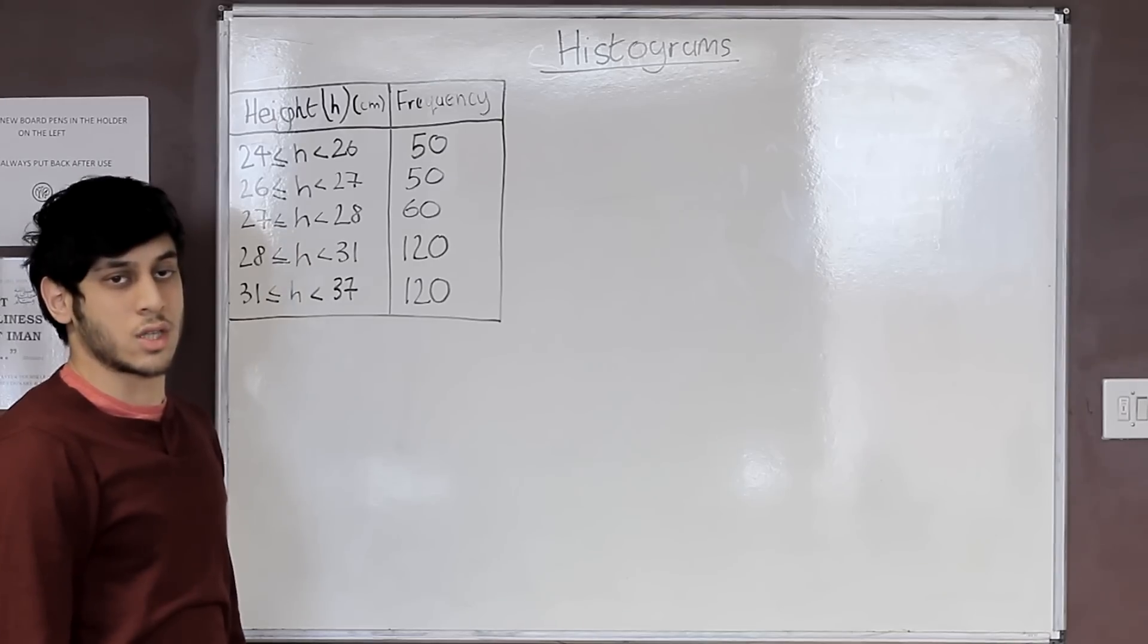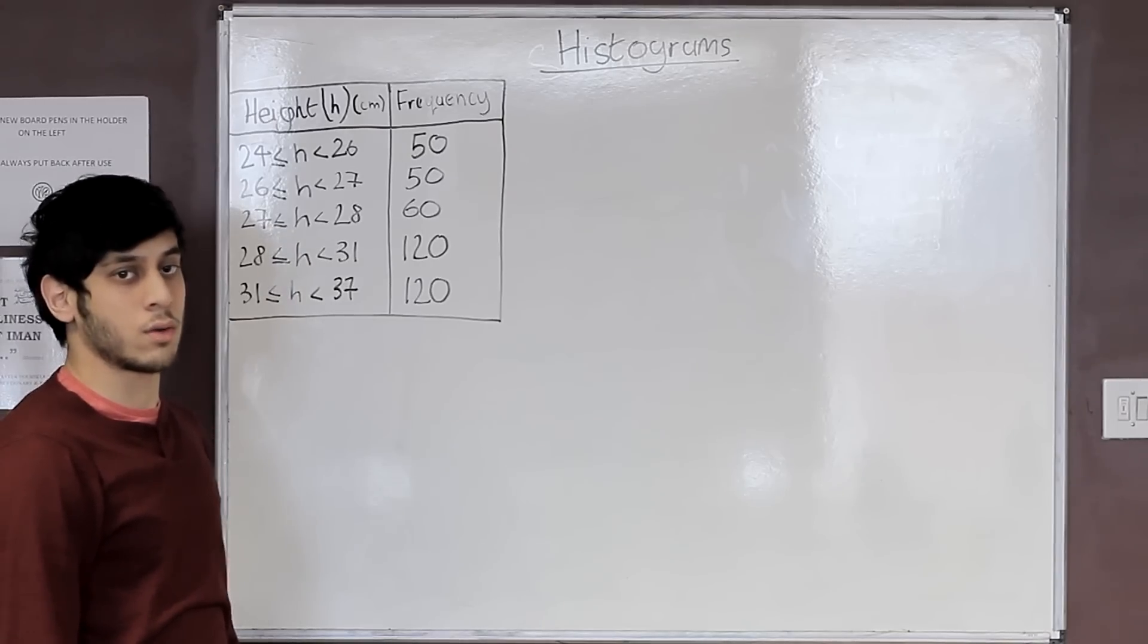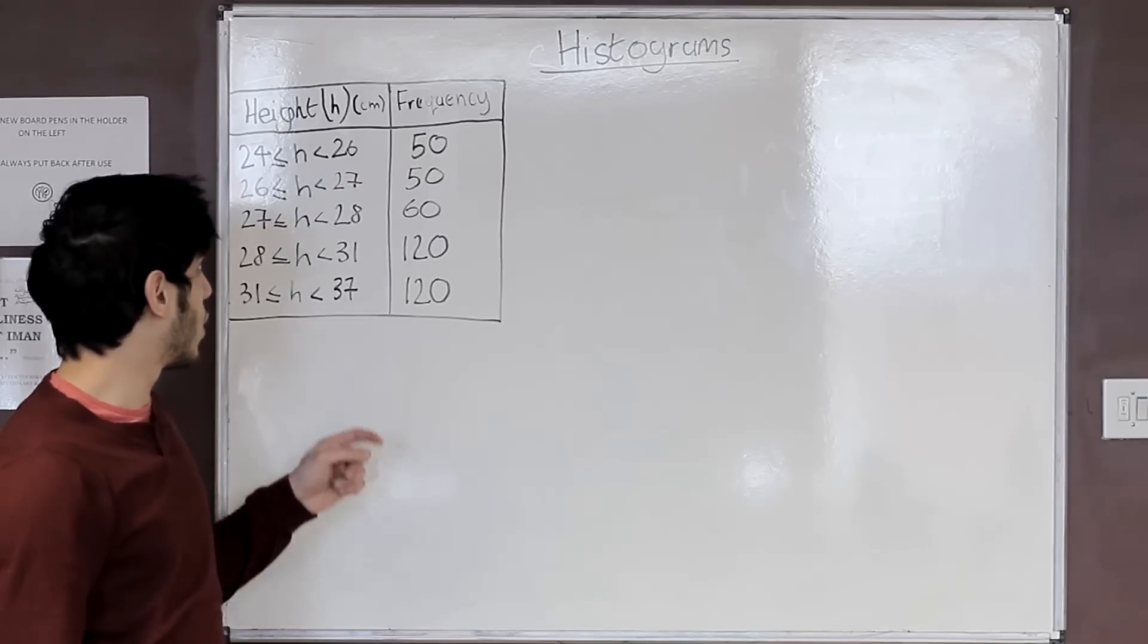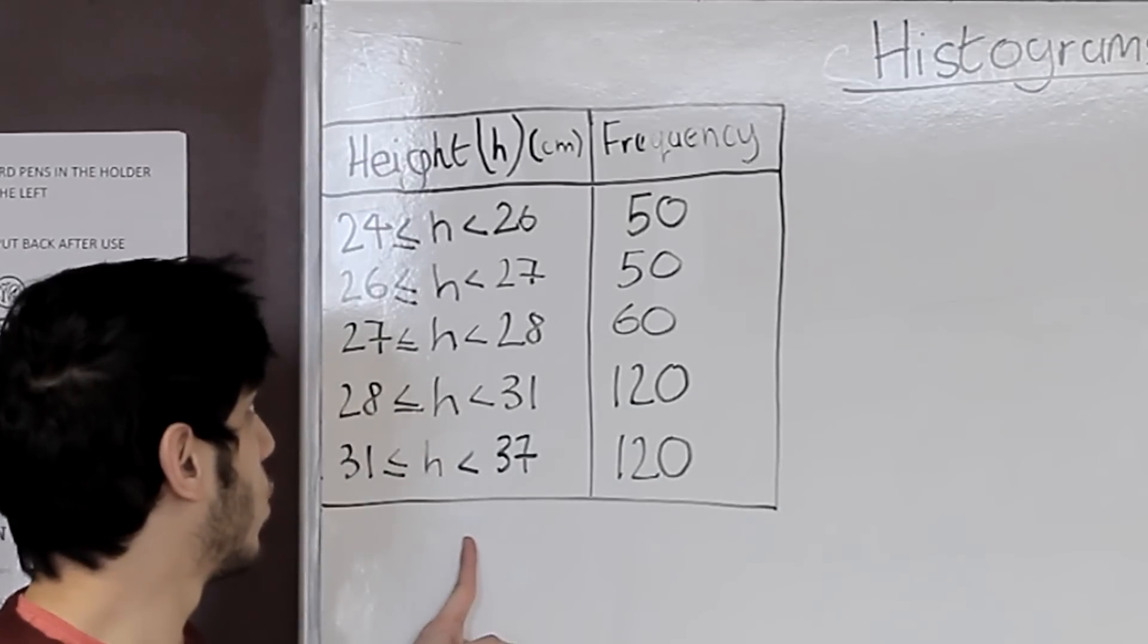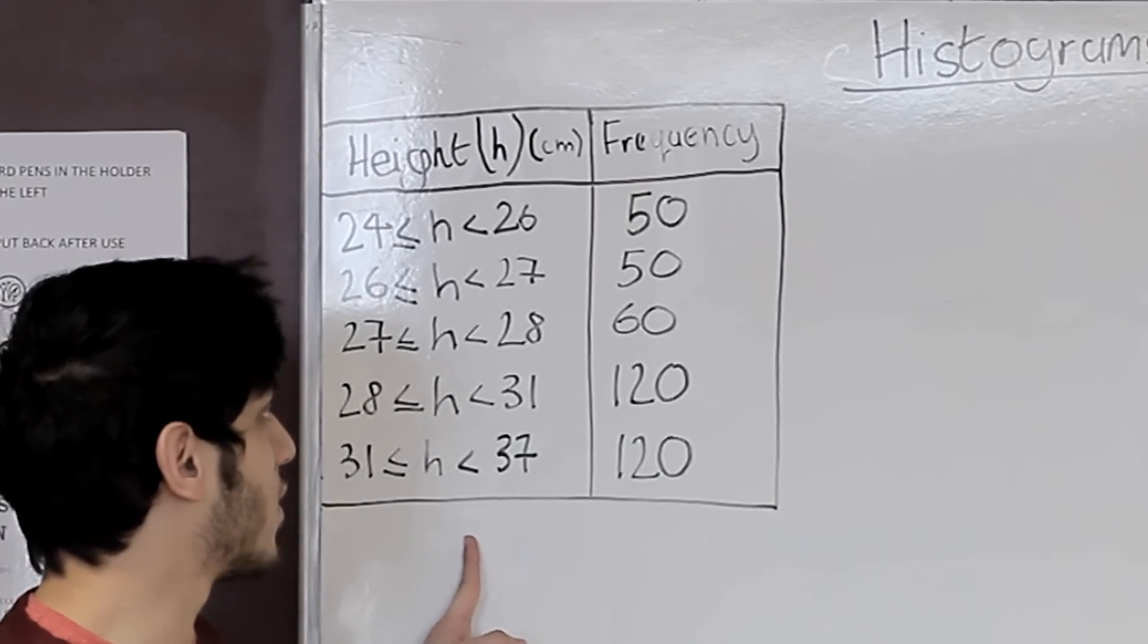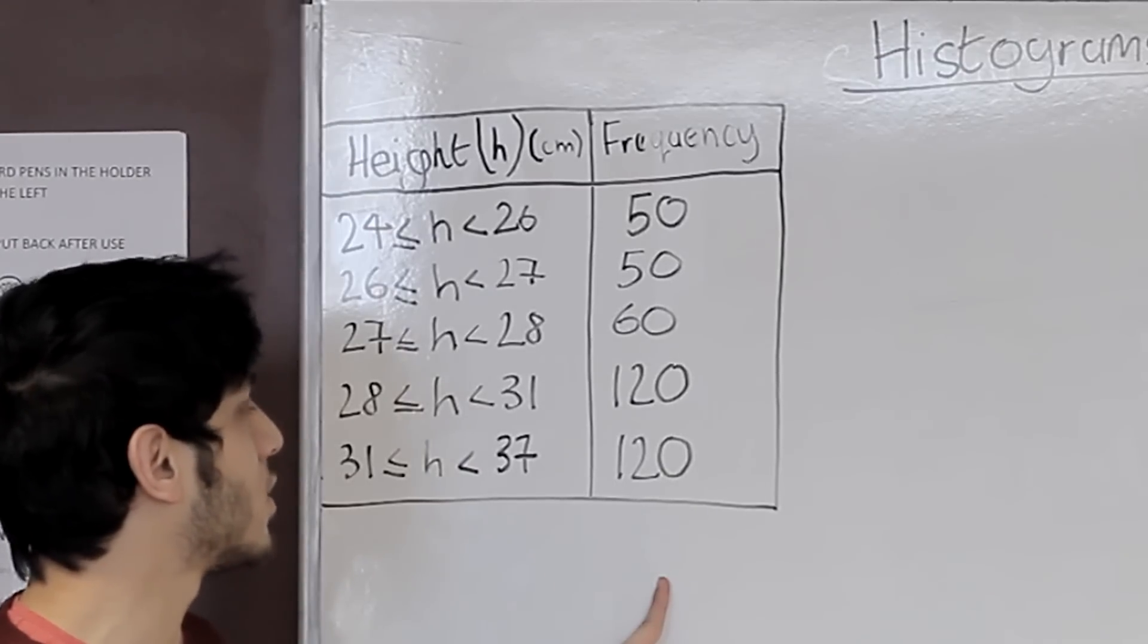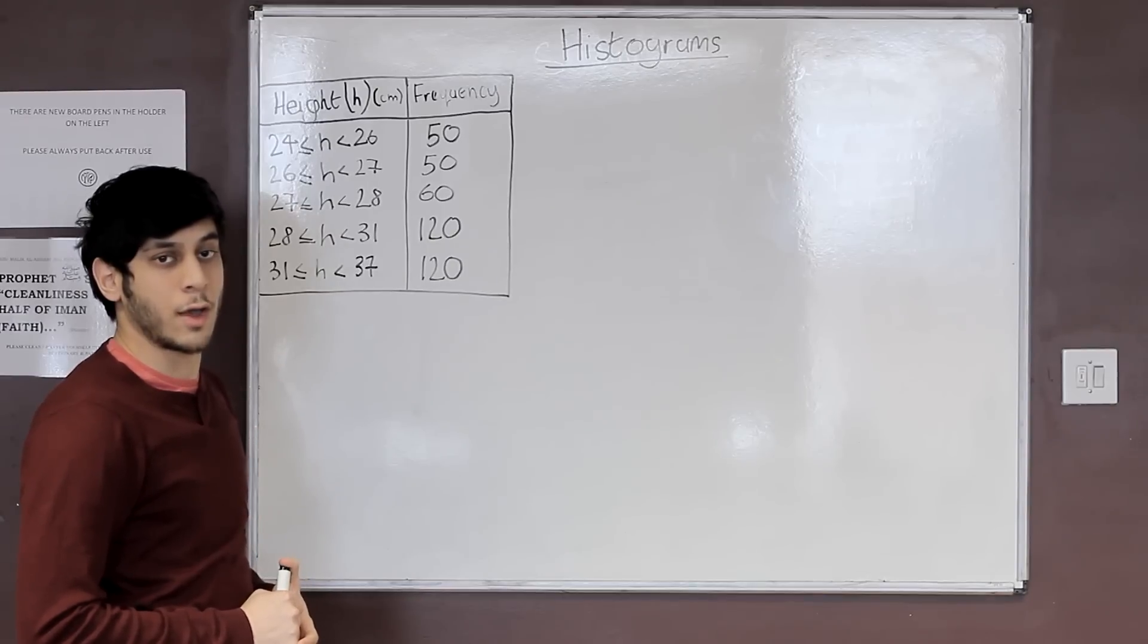This is a typical example of a histogram table which is separated into two parts. The first part is the class interval which is our height and the second part is the frequency which mentions the amount of people in the class interval.